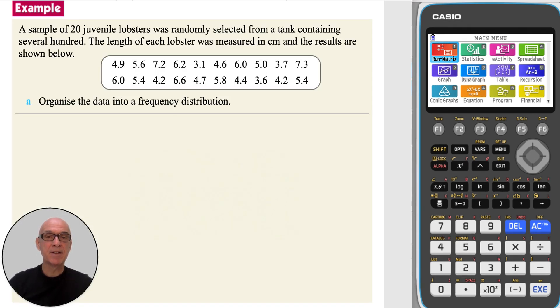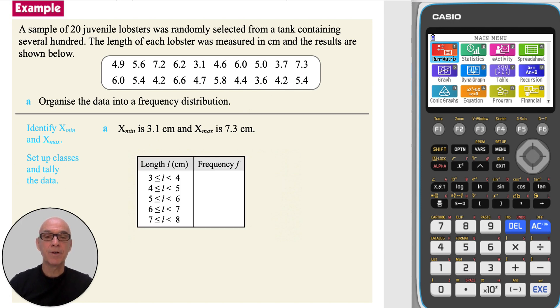In part A of this question, we're asked to organize the data into a frequency distribution. If we begin by identifying the minimum and maximum values, which are 3.1 and 7.3, then set up several classes of equal width and tally the data, as shown.